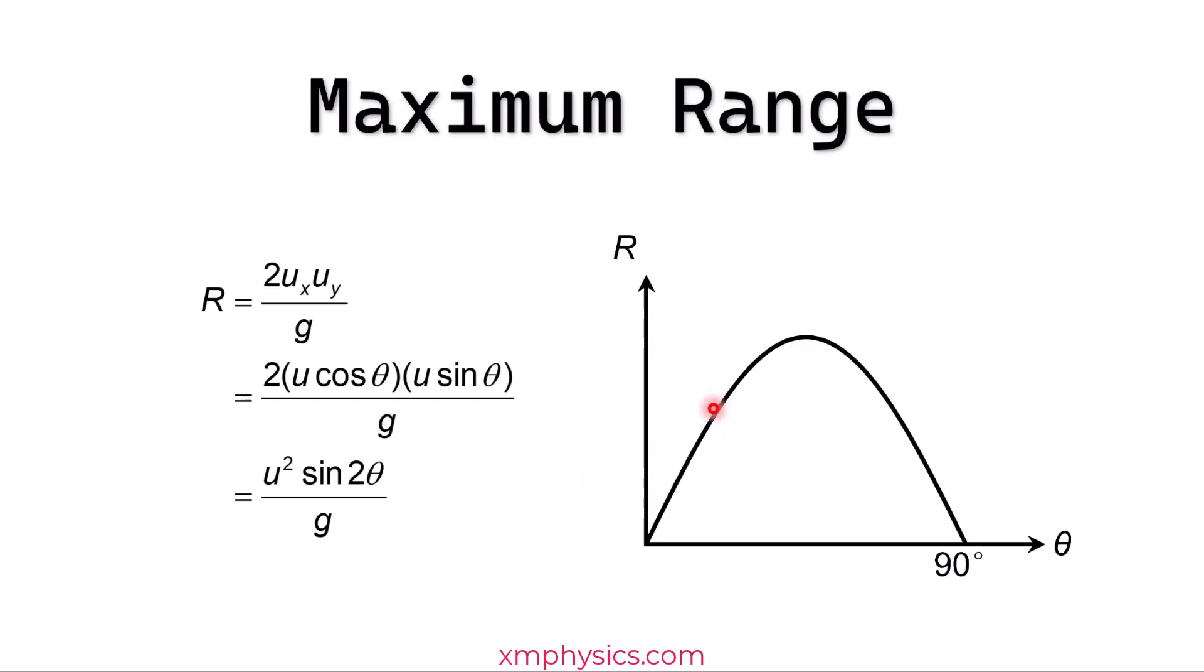So from this graph, isn't it obvious now that the maximum range is achieved when the launch angle is 45 degrees? Because when theta is 45 degrees, sine 2 theta, which is sine 90 degrees, is 1.